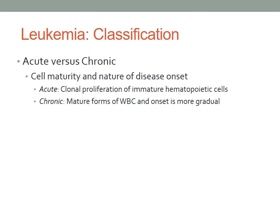Leukemia is classified as acute or chronic. The first type of classification is by how fast the leukemia progresses. In acute leukemia, the abnormal blood cells are immature blood cells or blasts. They are not able to carry out their normal functions and they multiply rapidly, so the disease worsens quickly and the patient feels sick right away. Acute leukemia requires aggressive, timely treatment.